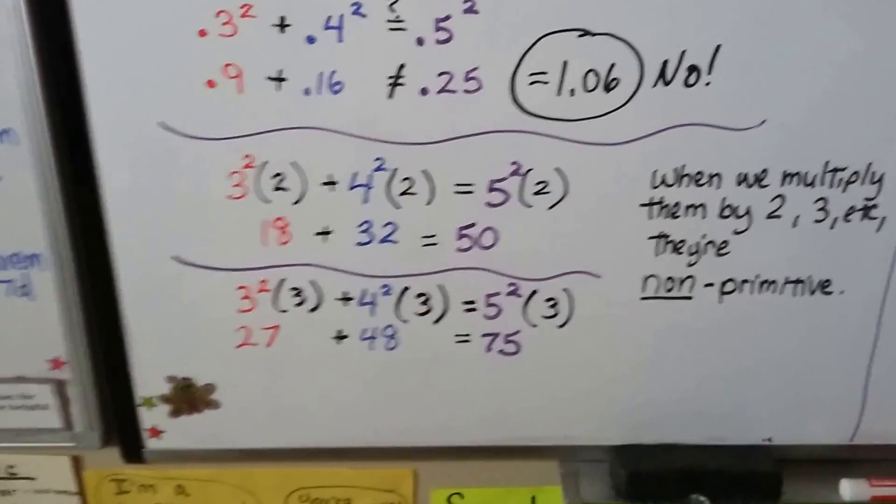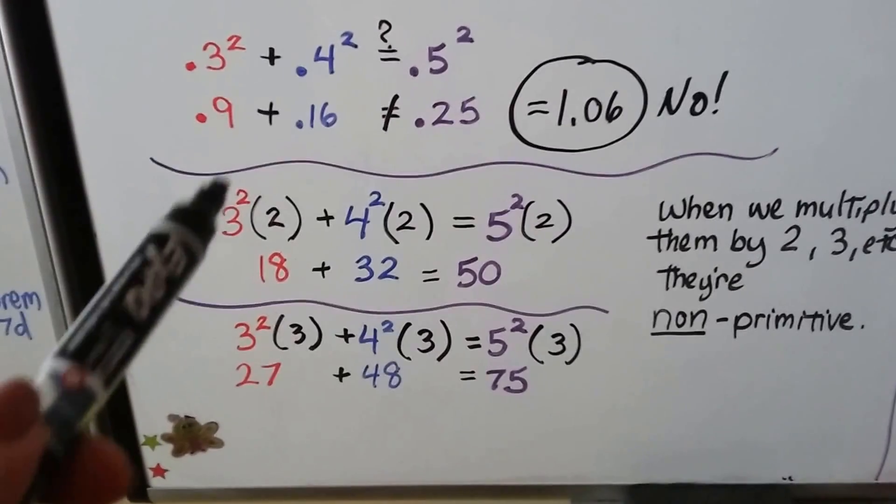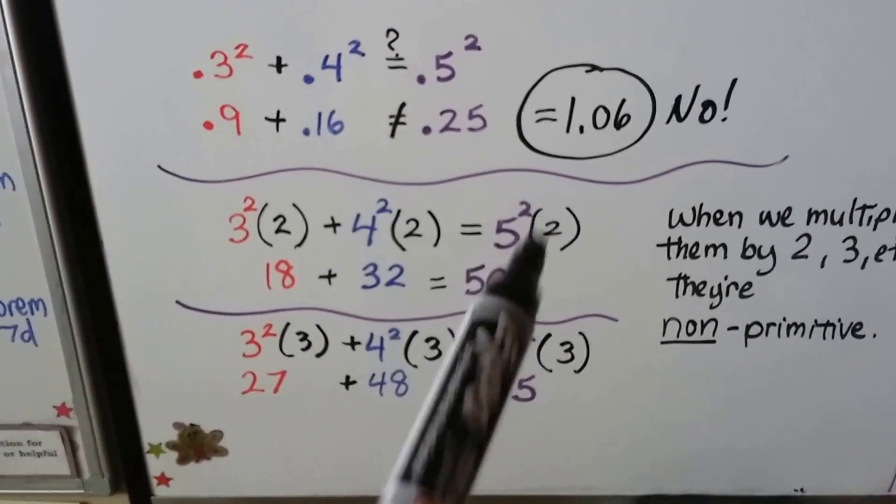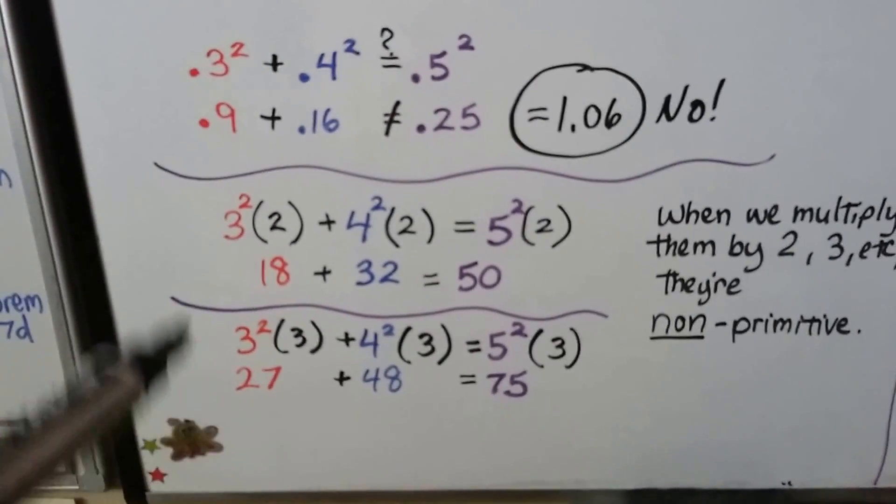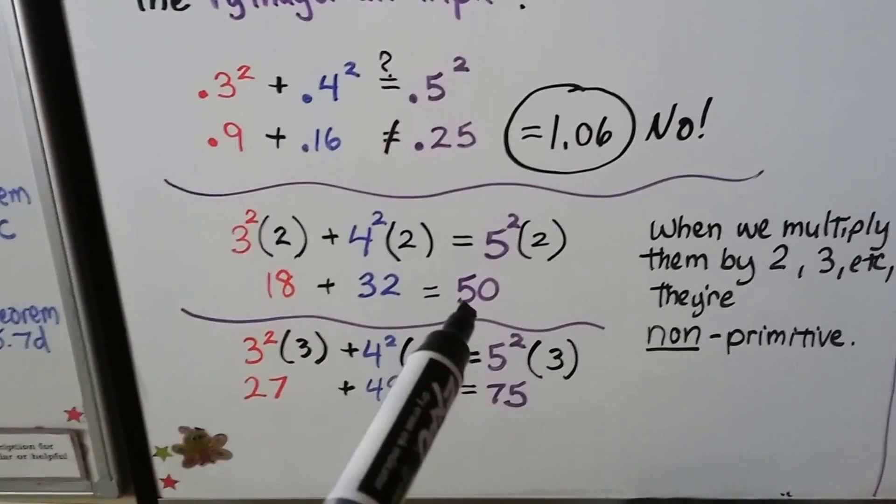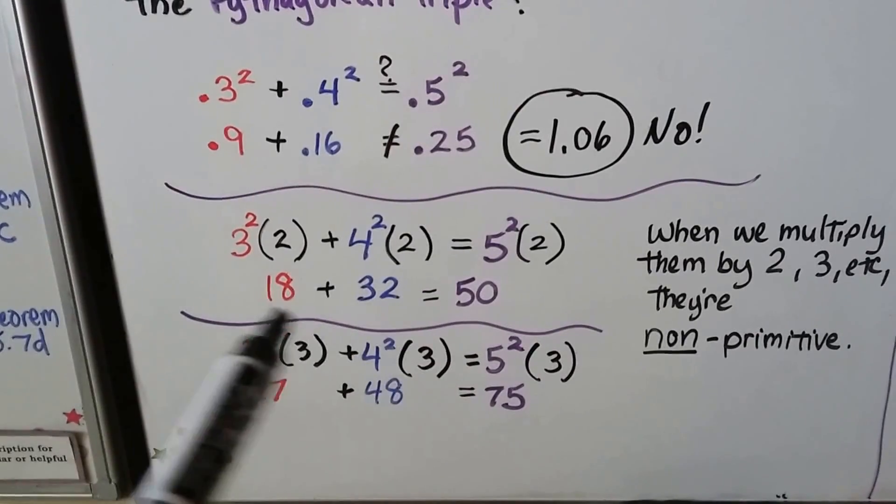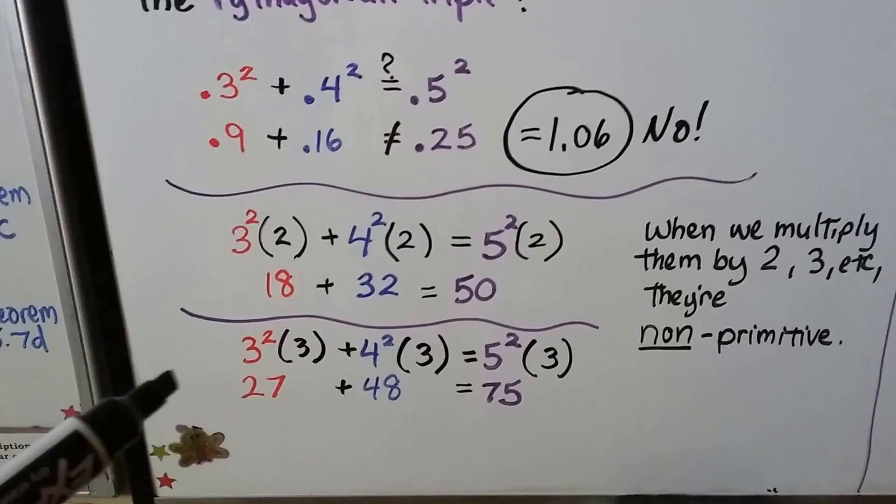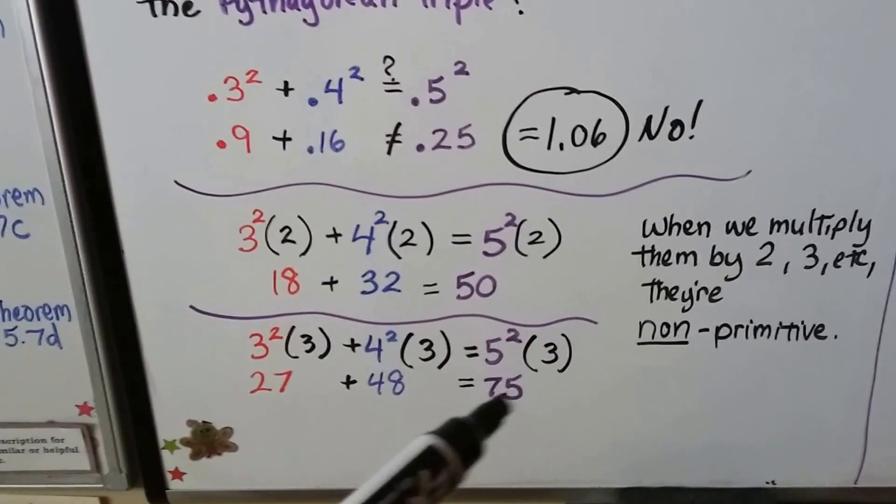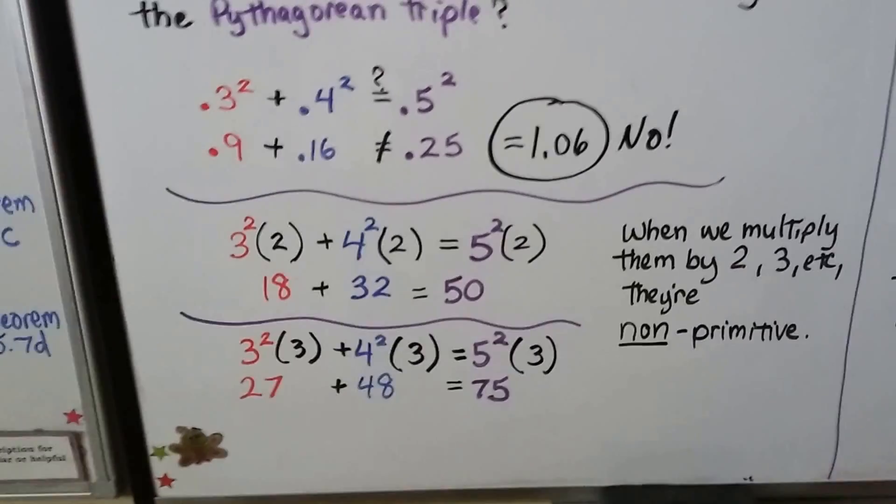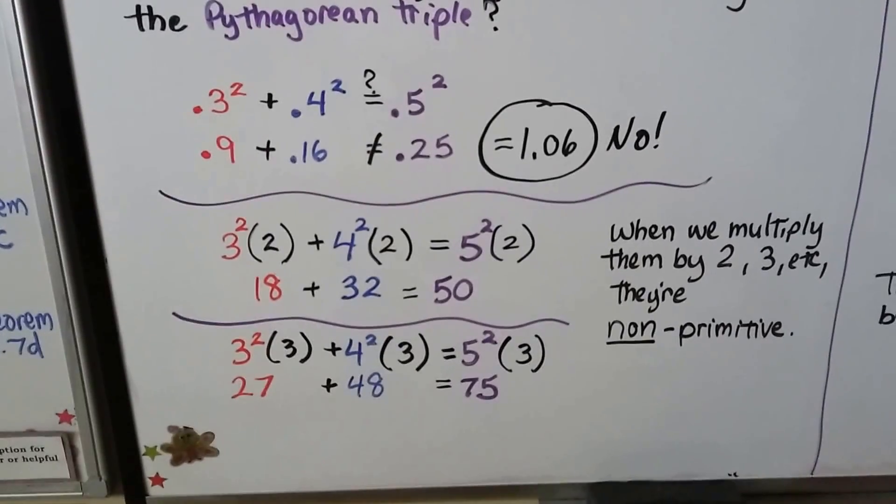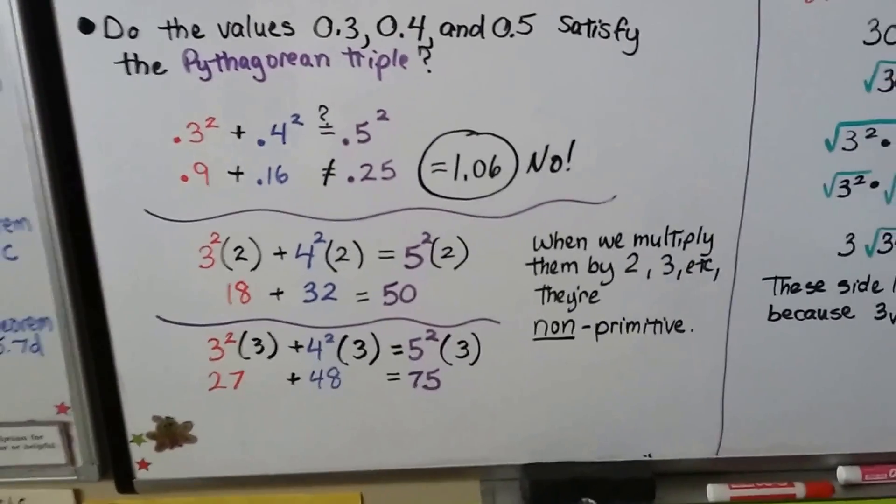Take a look at this. We've got our triple, 3, 4, 5. They're squared. As a squared plus b squared equals c squared. When we multiply each of the terms by 2, we get 9 times 2 is 18, 16 times 2 is 32, and 25 times 2 is 50. 18 plus 32 is equal to 50. And if we multiply each term by 3, we get 27 plus 48 equals 75. And that's true. So when we multiply them by 2, 3, 4, 5, etc., we make them non-primitive.